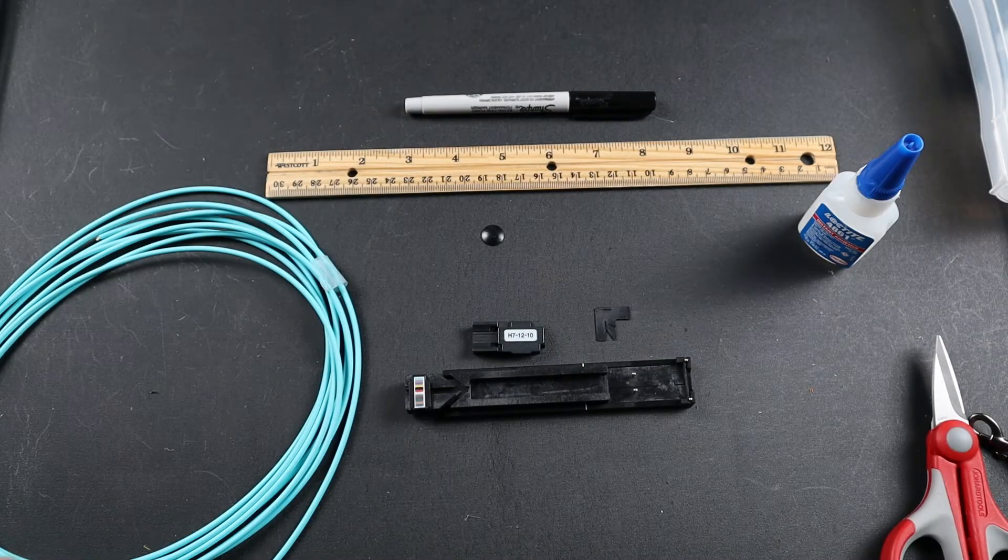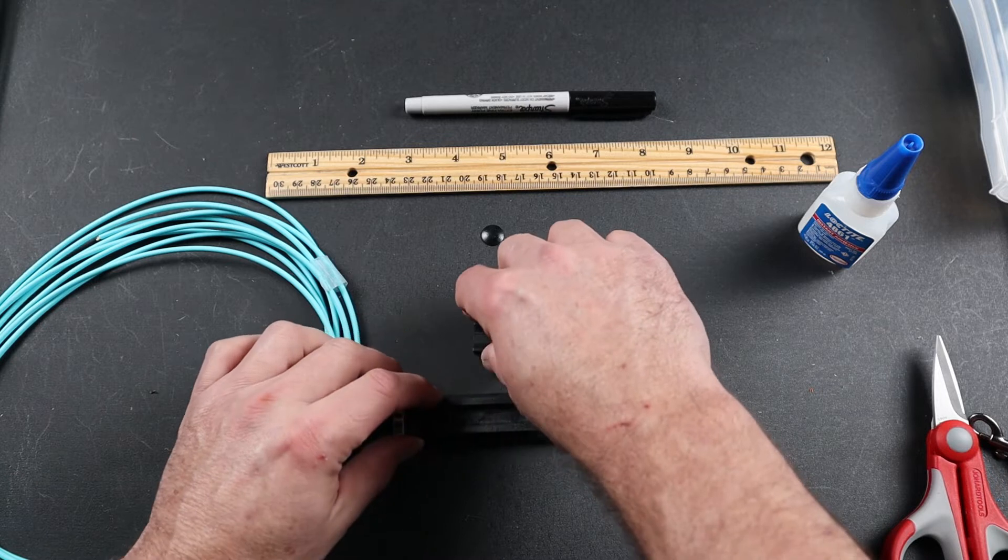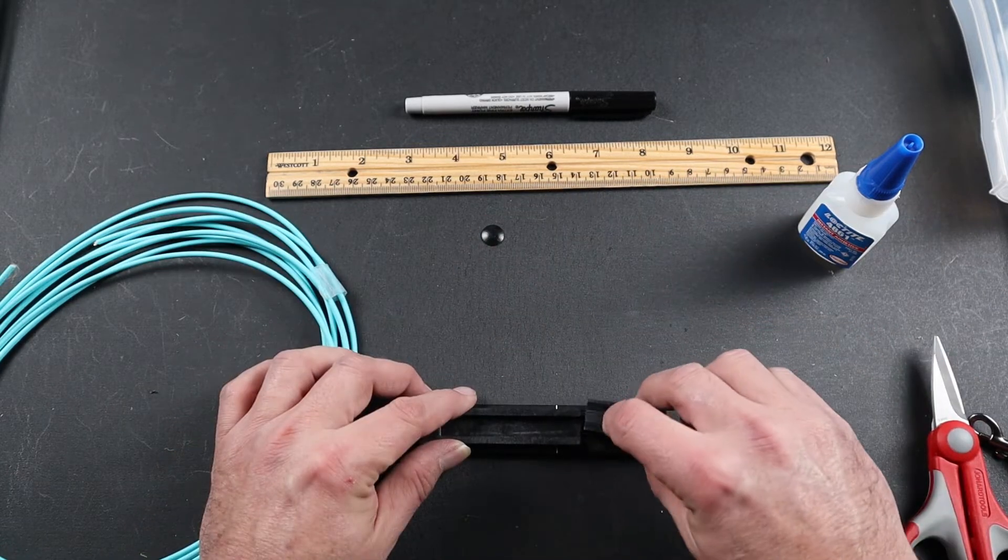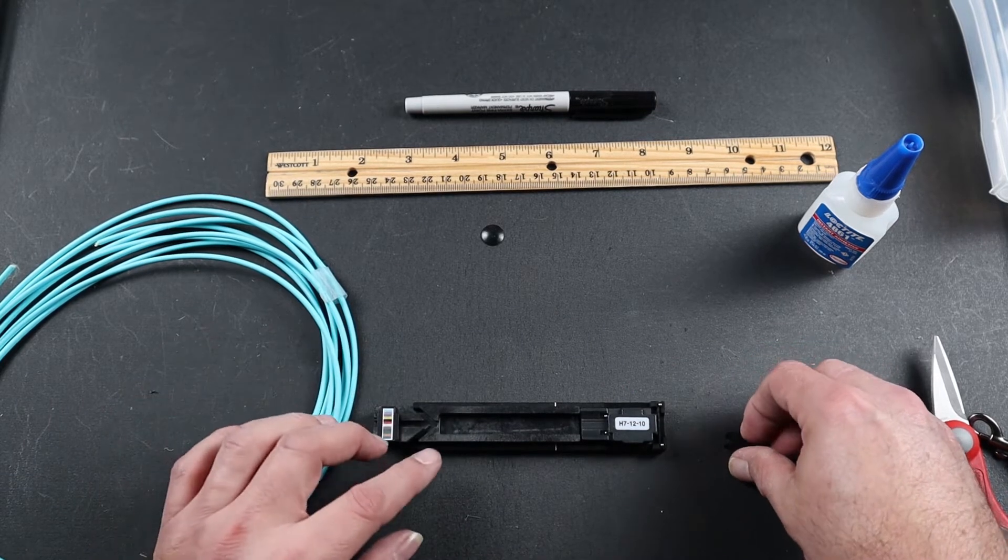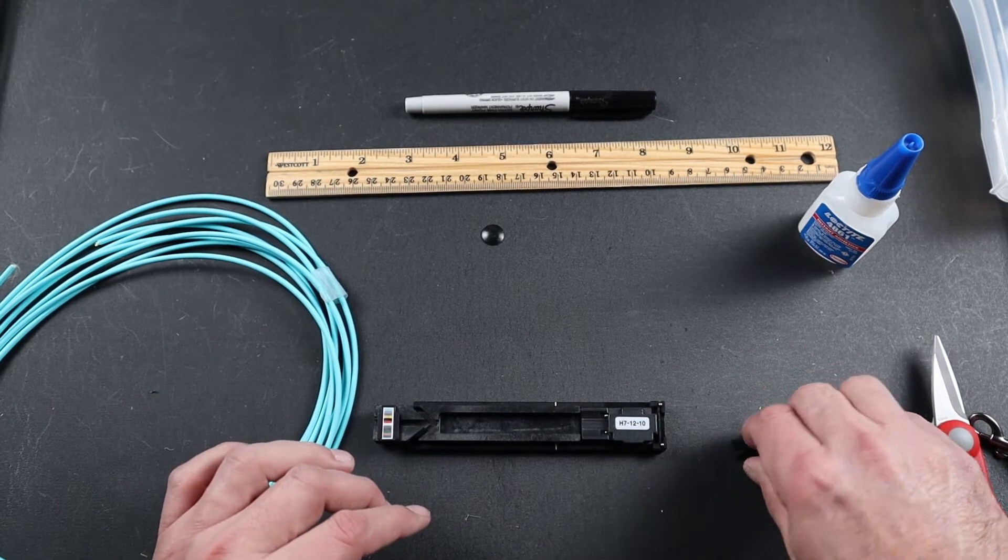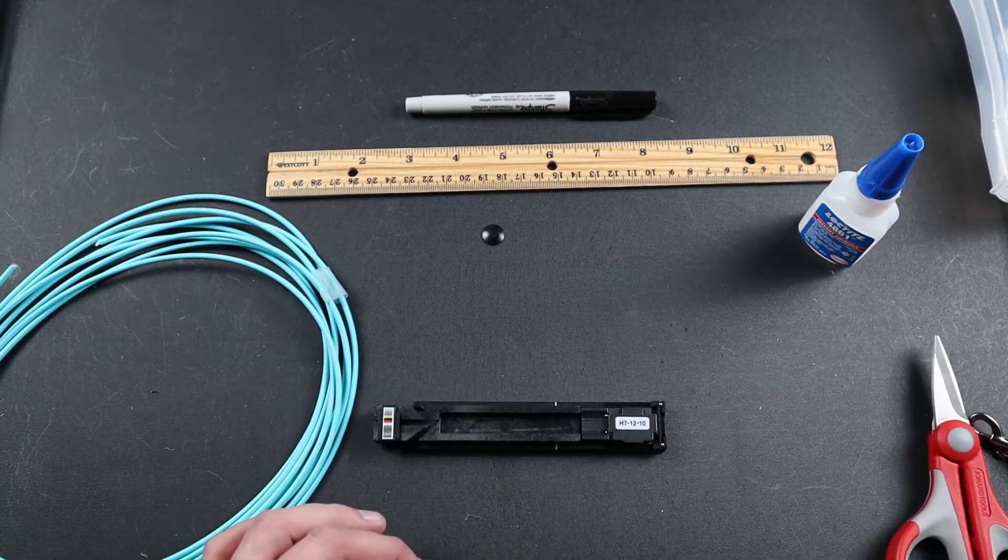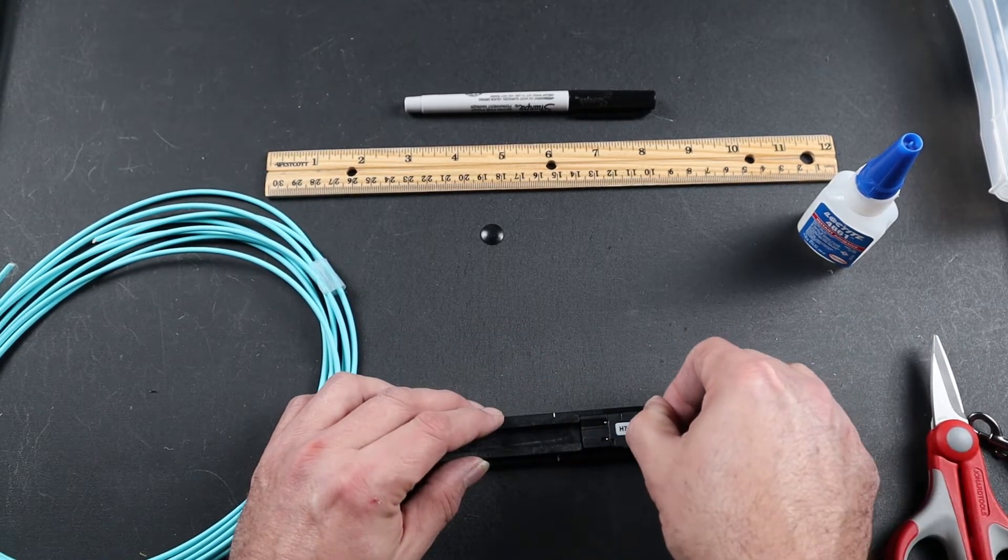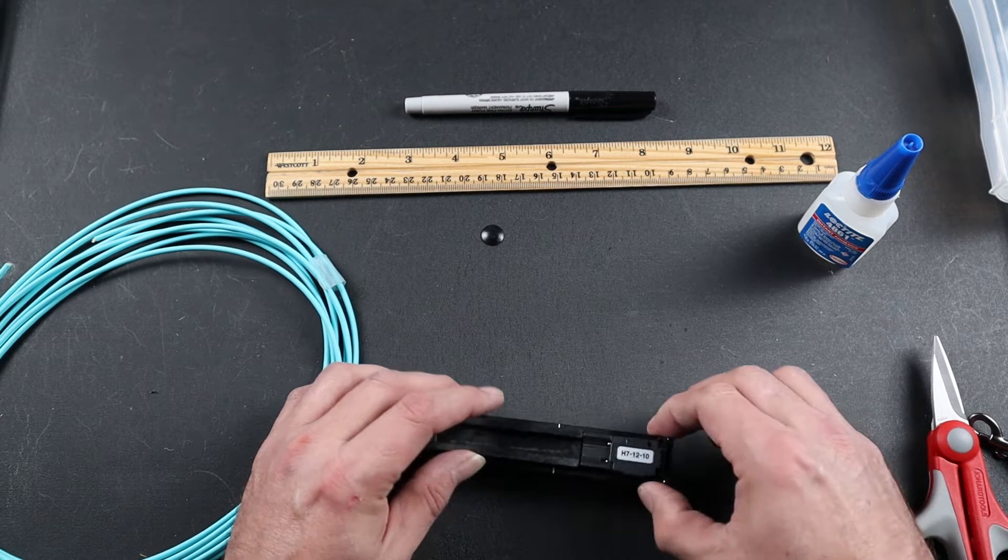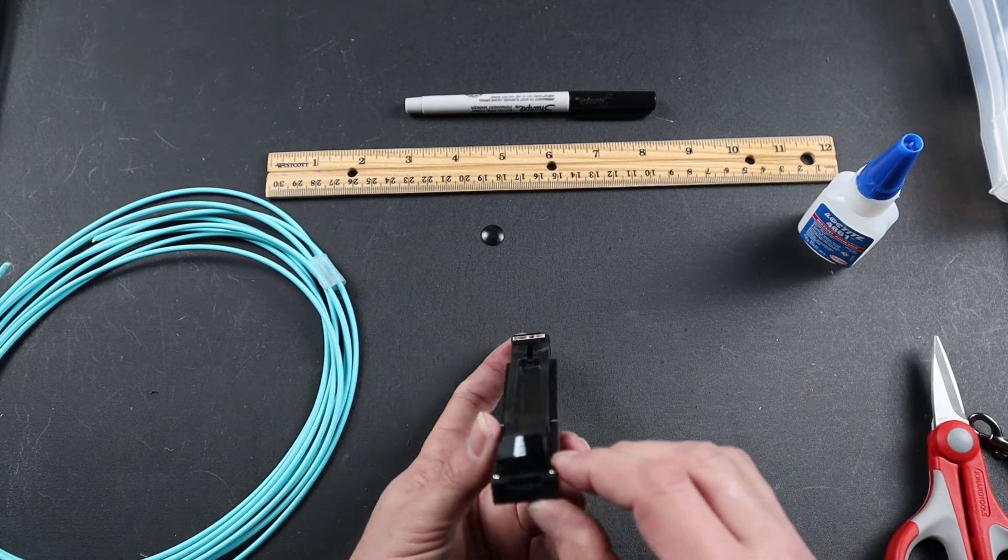First, assemble your mainframe, placing the H7-1210 fiber holder into the mainframe and your disposable fiber stacker, making sure that the fiber channel is parallel to the holder.